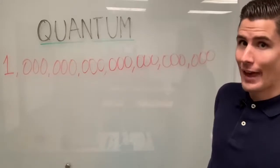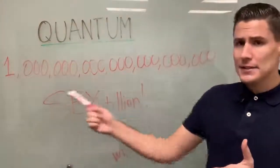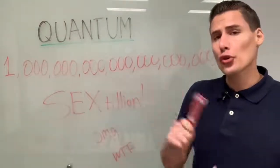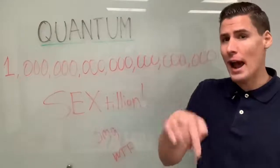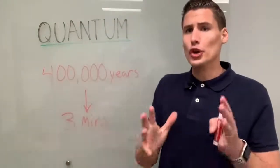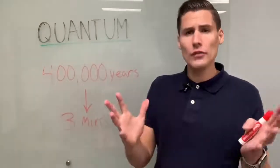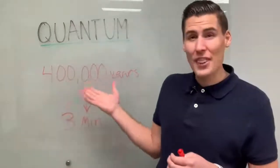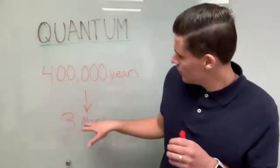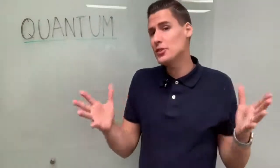Yeah, it's like that. So this is how many simultaneous states or how many options Google's quantum computer can be in right now at one time. Using that technology, Google was able to take a problem that would take all of the supercomputers on Earth 400,000 years to solve. And they were able to solve that problem in three minutes. Three minutes. Pretty spooky stuff, huh?